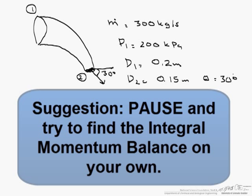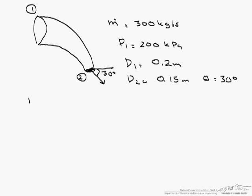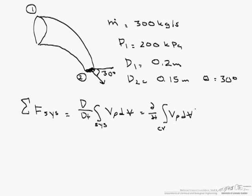Let's start with the overall equation for this integral momentum balance. The sum of the forces on the system equals the material derivative, which is d/dt over the control volume of v rho dv, that's our time dependence, plus over the control surface v times rho v dot n dA.